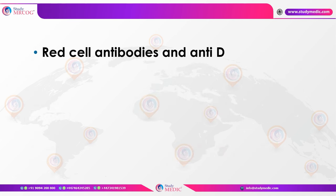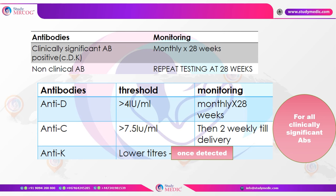Now regarding red cell antibodies and anti-D: whenever clinically significant antibodies are present — anti-C, anti-D, or anti-K — monitor every four weeks up to 28 weeks, then every two weeks until delivery. This applies to all clinically significant antibodies whether D, C, or K.